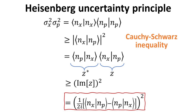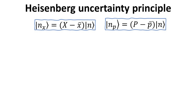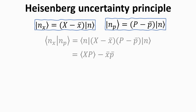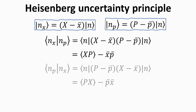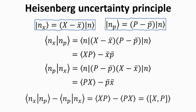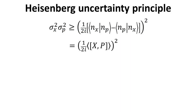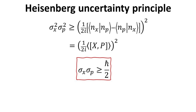In most textbooks, the Heisenberg uncertainty principle is expressed in terms of the x and p operators. The more familiar form can be easily obtained as follows. Using the definitions of |n_x⟩ and |n_p⟩, the inner product of n_x and n_p can be evaluated while respecting the ordering of the x and p operator product. When we take the difference of these two inner products, the x-bar and p-bar product cancels since these are just numbers and their product ordering does not matter. The terms that survive yield the expectation value of the commutator of x and p. Using the commutation relation of the x and p operators, we arrive at the most popular form of the Heisenberg uncertainty relation.